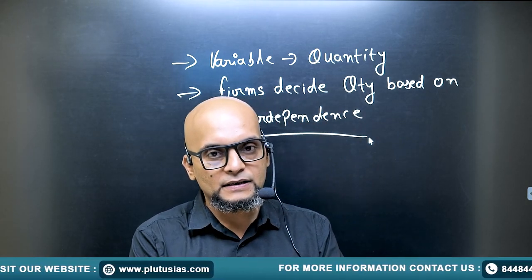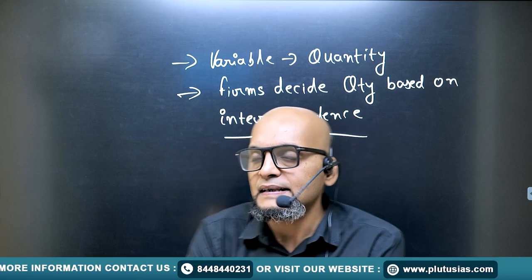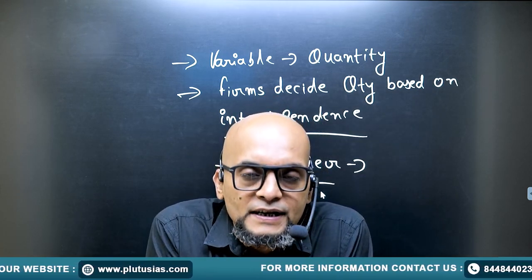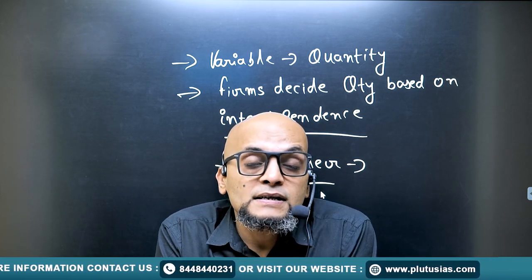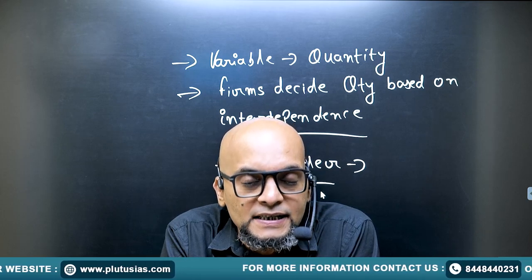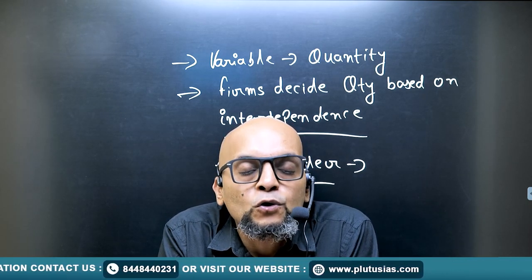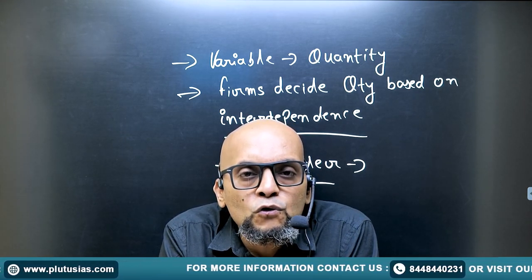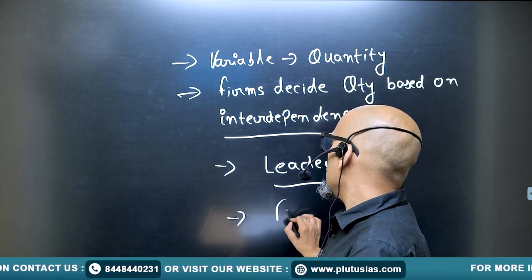They are dependent on each other — so interdependence is a keyword here. What happens here is that the firm which decides to produce first is called the leader. The leader is a bigger firm, an old firm in that sector, with more experience and more expertise. The second firm's job is to follow the leader — that second firm is called the follower.